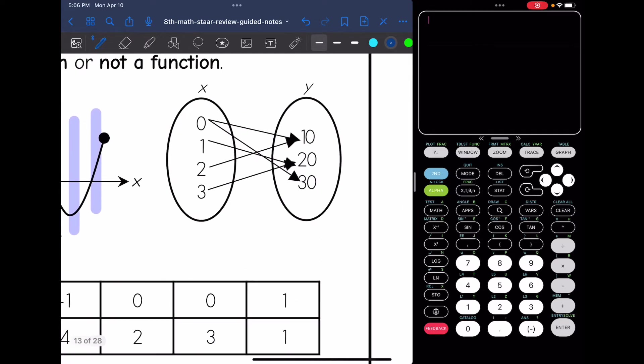This mapping right here, right off the bat, zero has two outputs. It maps to 10, and it maps to 30. So that makes this not a function.